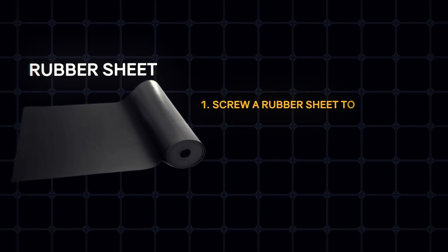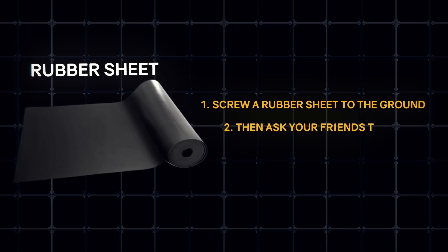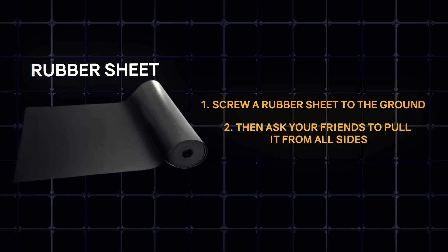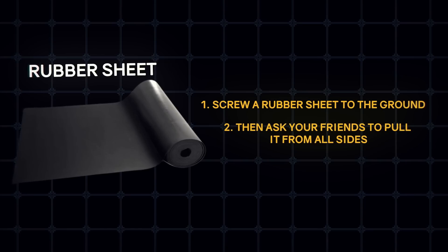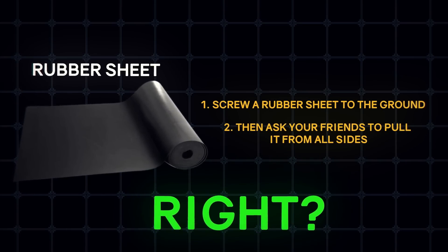In ordinary life, finding the point of expansion of an object is easy. Screw a rubber sheet to the ground and then ask your friends to pull it from all sides. You'll notice that the point where the sheet is attached is the center of its expansion. But then the same can apply to the universe, right?